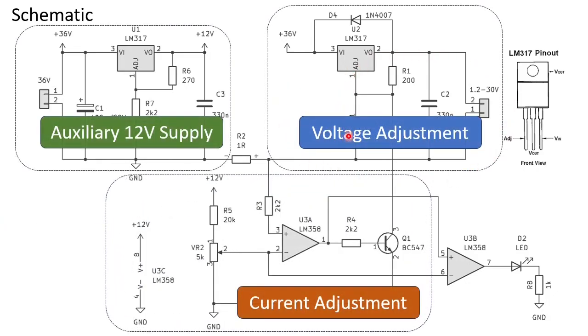This part takes care of the voltage control. This part does the current control. And here we have an auxiliary 12 volt supply for the panel meter and the op-amp that we use. And yes, there is a fourth part, which is the LED indicator for the current limit.